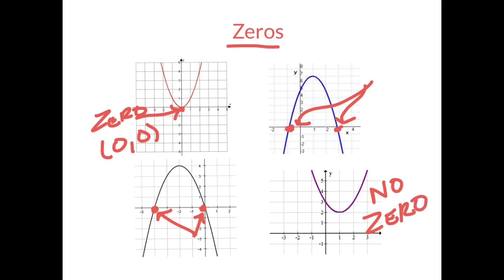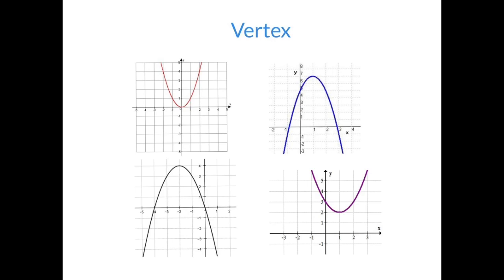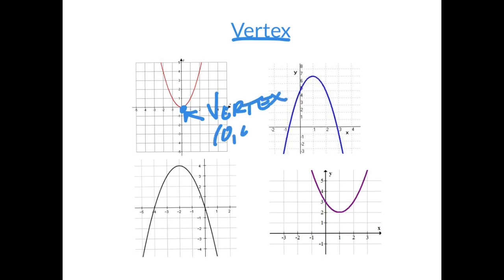This is not the only part we're interested in — we also have the vertex. Like we mentioned before, the vertex is the point where the parabola changes direction. In this case, I have my parabola coming down, and I notice that right here my parabola goes up. So that point is my vertex, and in this case it is 0 comma 0.